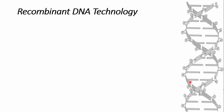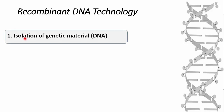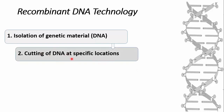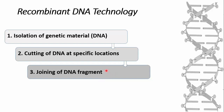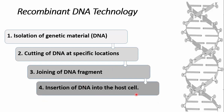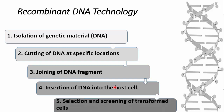Recombinant DNA technology comprises five main steps: first, isolation of genetic material; second, cutting DNA at specific locations using restriction endonucleases; third, ligation with DNA ligase enzyme to produce recombinant DNA; fourth, transformation of recombinant DNA into the host cell by conjugation, heat shock treatment, or electroporation; and fifth, selection and screening of transformed cells.